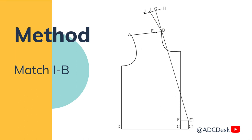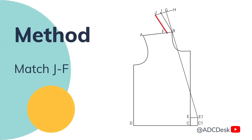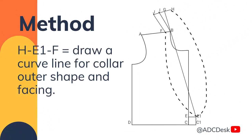Now, match I to B and J to F a diagonal line. So, we have this kind of draft. Now, join H, E1 and F. Draw a curved line for collar, outer shape and facing.